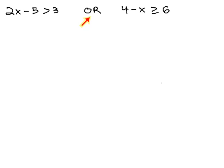An or compound inequality requires one or both of the inequalities to be true. It doesn't matter which inequality is true, as long as at least one of them is true, or both.